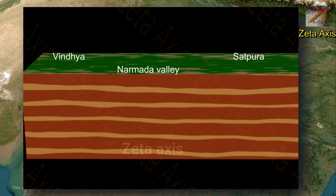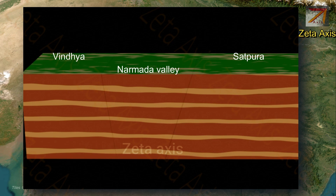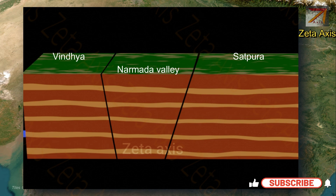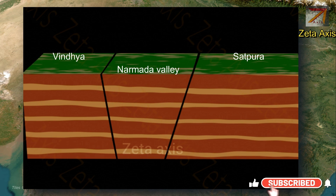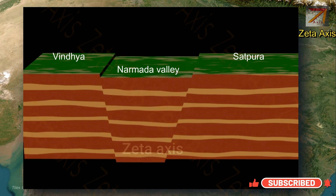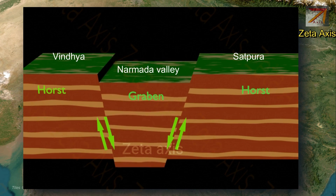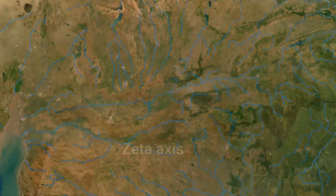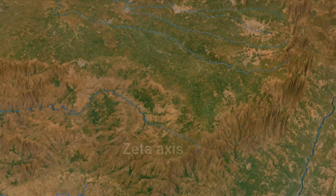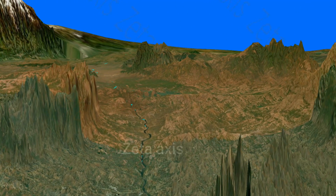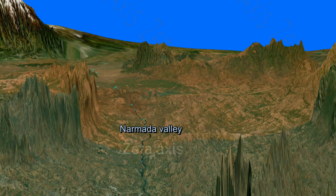The Narmada Valley is basically a graben — a layered block of earth crust that has moved down relative to the blocks on either side due to faulting. The two normal faults known as Narmada North Fault and Narmada South Fault, parallel to the river's course, mark the boundary between the Narmada valley and the Vindhya block in the north and Satpura block in the south.